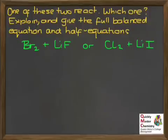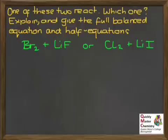Here's an opportunity to put into practice the oxidising ability idea for the halogens and bring it together with what you've already learnt about redox reactions and writing half equations. Two possible combinations are given: bromine reacting with lithium fluoride, or chlorine reacting with lithium iodide. Only one of those two combinations will undergo a redox reaction. Which one is it? Explain your reasoning, give a full balanced equation, write the half equations, and decide which represents oxidation and which represents reduction.